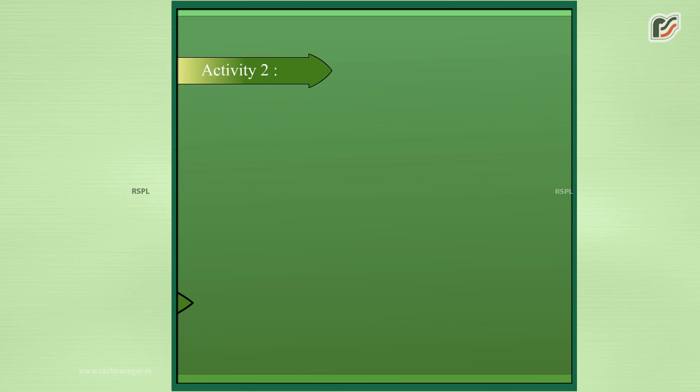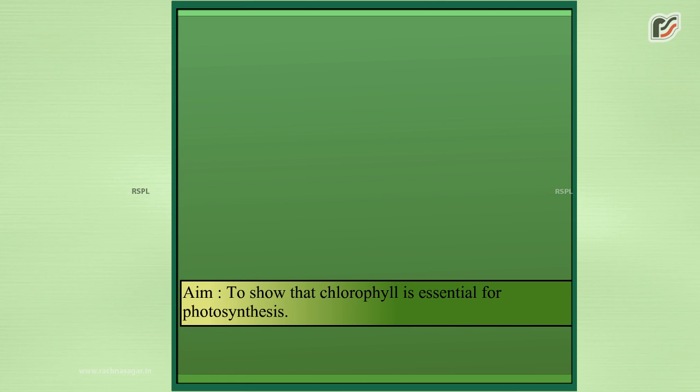Activity 2. Aim: To show that chlorophyll is essential for photosynthesis.